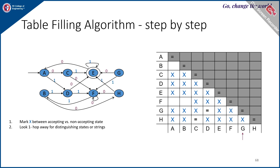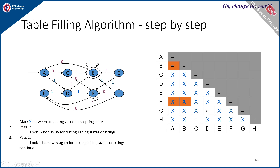In the next iteration, take the remaining blank pairs. For A and F: A on 0 goes to C, F on 0 goes to F. Check C and F — if that pair is already crossed, then A and F is also crossed. So A and F are not equivalent. Similarly, B and F are not equivalent. But A and B are found to be equivalent.